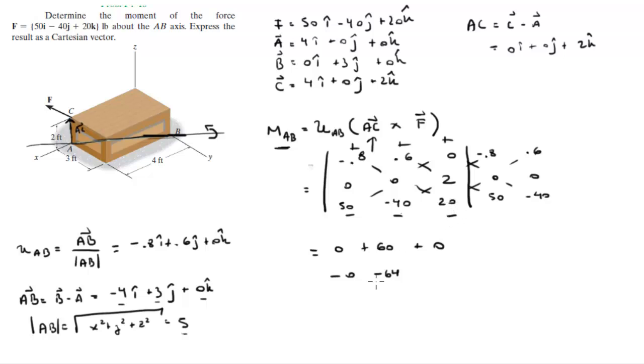So this is 0, 60 minus 64 is negative 4. Therefore, the answer has a magnitude of 4 foot-pounds. Remember, this is magnitude, so it's always positive. Foot-pounds because distances are given in feet, force is given in pounds, so it's foot-pounds for the moment created about AB.